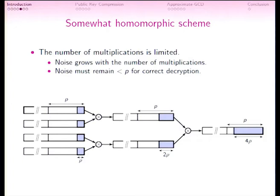You can always increase the size of the prime P to accommodate more multiplications, but the number of multiplications remains limited. That's why we call this a somewhat homomorphic scheme — not a fully homomorphic scheme.